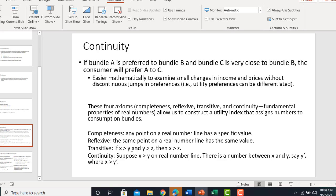Transitive: If X is greater than Y and Y is greater than Z, then X must be greater than Z. And finally, continuity. Suppose X is greater than Y on a real number line. There is a number between X and Y, say Y prime, where X is greater than Y prime.